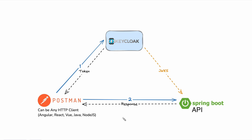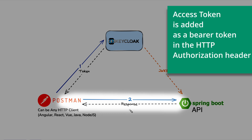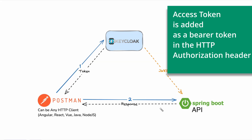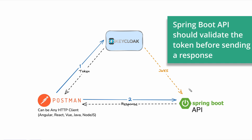Ultimately, the application should have a valid access token in order to call the Spring Boot API. Once the access token is received, the Postman client calls the Spring Boot API as the second request. Whenever the request is sent, the received access token will be added as a bearer token in the authorization header. Before sending a response, the Spring Boot API should validate this access token — whether it is a legitimate one or not.